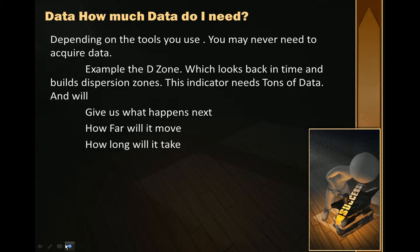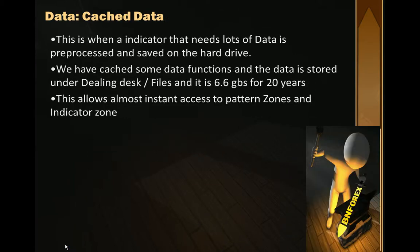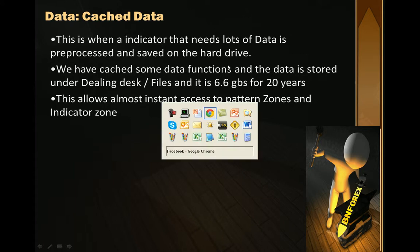An example of a tool that looks back in time and builds dispersion — this indicator needs tons of data, but it will tell us what happens next: how far to move and how long it will take. Data caching is when an indicator that needs lots of data is pre-processed. Note: it does not save hard disk space — that's a typo in the notes — it actually eats up more hard disk space. Some cached data functions take up around six gigabytes for 20 years of data, allowing access to patterns, zones, and indicators.